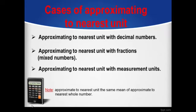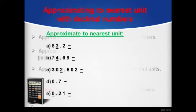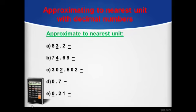Let's start with approximating to nearest unit with decimal numbers. Our steps will be: first, keep numbers before the units digit the same as it is; then look at the tenths digit, which is directly after the decimal point. If it's a strong number, increase the units digit by 1. If it's a weak number, keep the units digit the same. Now let's apply the steps on these exercises.